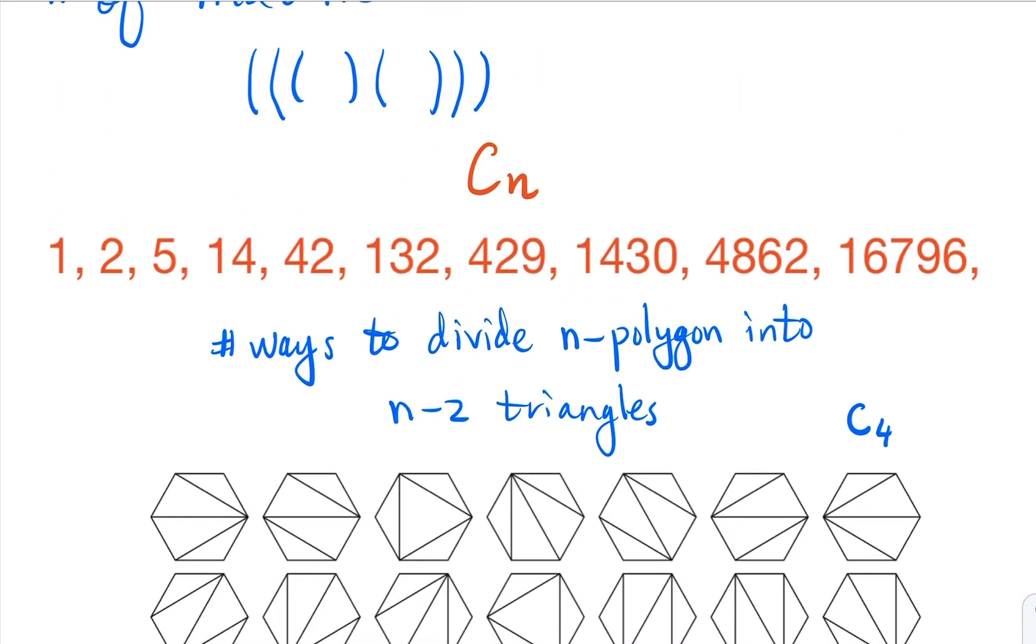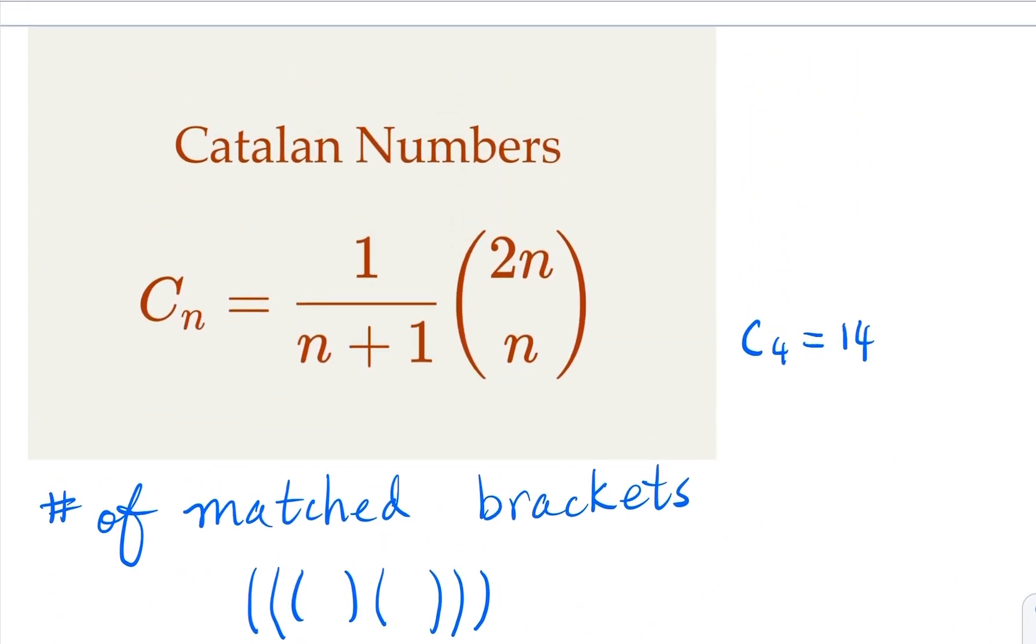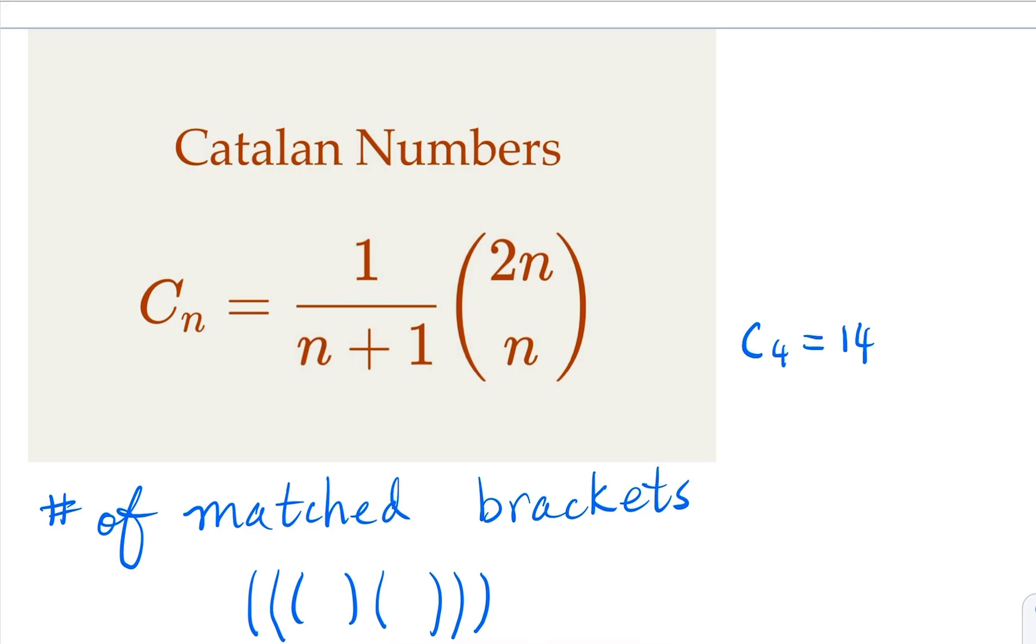So what are the Catalan numbers? The initial Catalan numbers are the following: 1, 2, 5, 14, 42, 132, and so on. Hope you enjoy the video. Please subscribe to the channel.